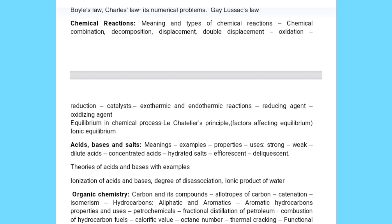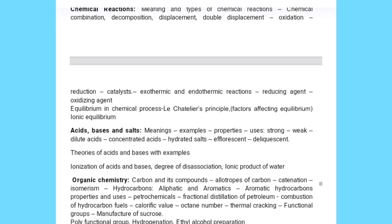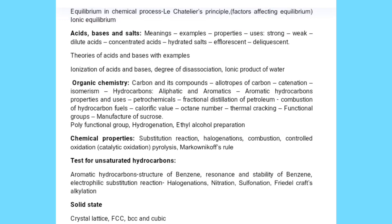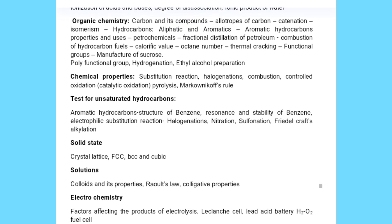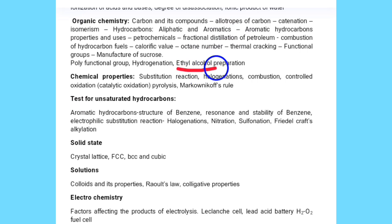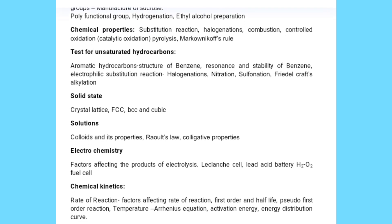In chemical reactions, you can go through all the topics except equilibrium in chemical processes — the remaining part is already covered. From acids, bases, and salts, you will find important meanings, properties, uses, and the distinction between strong and weak acids. Next, from organic chemistry — carbon and its compounds — this was also in the GPSTR exam. Topics include aromatic hydrocarbons, their properties, preparation of ethyl alcohol, hydrogenation, and polyfunctional groups.